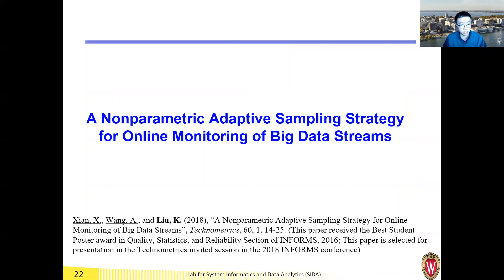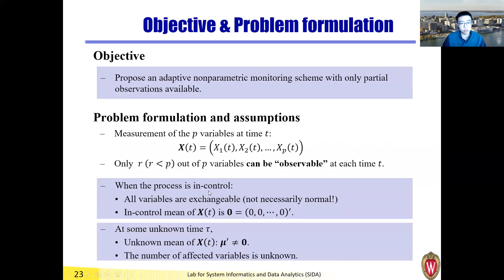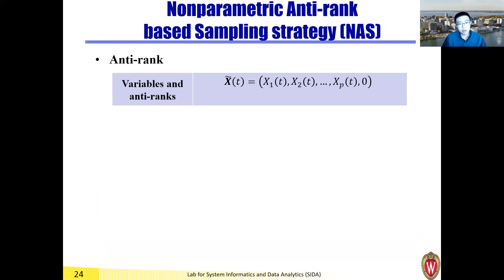However, one critical limitation is the normal distribution assumption. In practice, once the dimension increases, it's hard to satisfy the normal assumption. This motivated the second paper — another Technometrics paper three years later — where we extend beyond the normal assumption. The problem formulation is very similar, except now we do not assume any normal distributions. We still impose an assumption called exchangeability: if we interchange the location of any two data streams, the distribution on x remains the same. We found that for some applications, like monitoring surface flatness in paper manufacturing, this assumption is often satisfied.